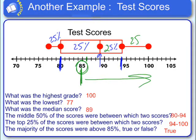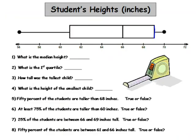Let's look at another boxplot. Here we have a boxplot of some students' heights. What is the median height of the students that were measured? That would be right here, and that would be 66 inches. What is the first quartile? The first quartile would be right here, and that would be 61 inches.